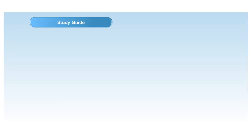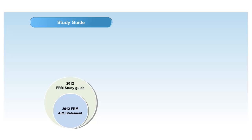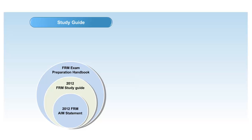GARP provides a bundle of guidance and study material on its website to help students structure their preparation for the exam. At the core is the AIM statement, which lists all the readings a student is required to go through along with the expected aim of each reading. There is also a study guide which sets forth primary topics and subtopics and contains a full listing of all recommended readings. GARP also provides an exam preparation handbook, suggesting strategies for completing the reading material. These three guides — AIM statements, study guide, and exam preparation handbook — are available for free at the GARP website.